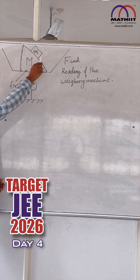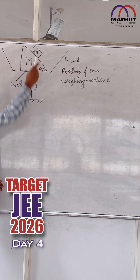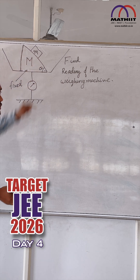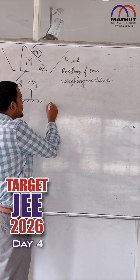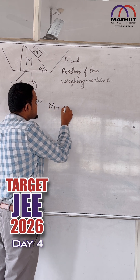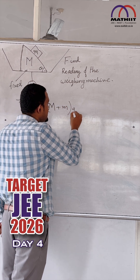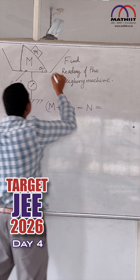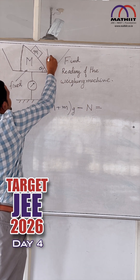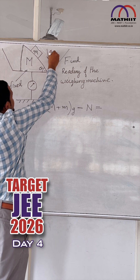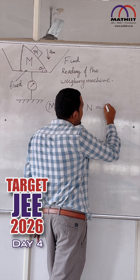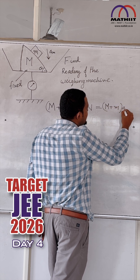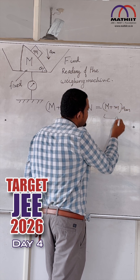There is a relative acceleration between capital M and small m. When we take the system as a whole — the capital M plus small m system — we find that (M + m)g minus the normal reaction equals (M + m) into the acceleration of the center of mass in the downward direction. This is our first equation.